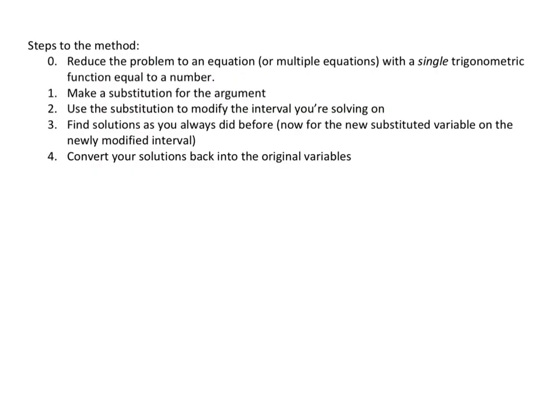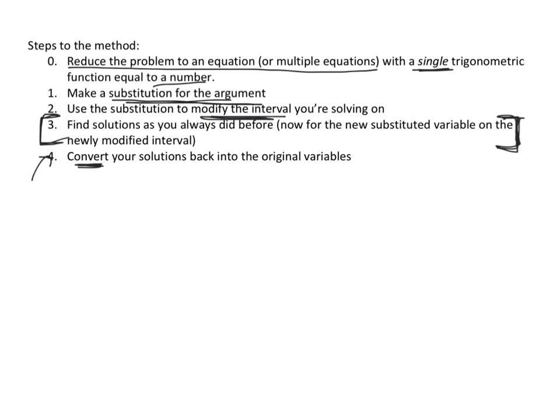The method summary: Step 0, if necessary, reduce the equation to a single trigonometric function equal to a number. Step 1, make a substitution for the argument — let m equal whatever is inside the trig function. Step 2, use the substitution to modify the interval bounds. Step 3, find solutions the same way as before. Step 4, convert your solutions back into the original variable. There is room for algebraic errors, so take care. All of these are steps you can do.